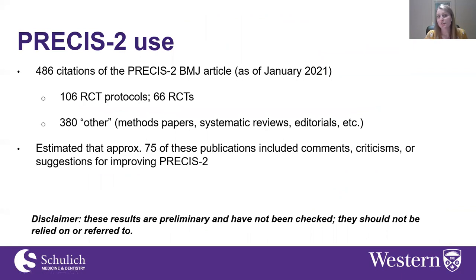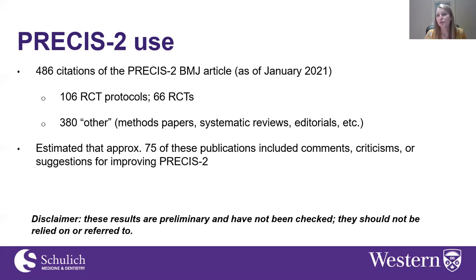Since PRECIS-2 was published in 2015, there have been nearly 500 citations of the article. About 100 were protocols for randomized controlled trials and 66 were primary reports of randomized trials, with a considerable proportion including PRECIS-2 tables or wheels in their published manuscripts. The remaining approximately 380 articles were methods papers, systematic reviews, editorials, and opinion letters. In our preliminary findings across these 486 citations, around 75 publications included comments, criticisms, or suggestions for improving the PRECIS-2 tool — though these results are preliminary and haven't yet been double-checked.